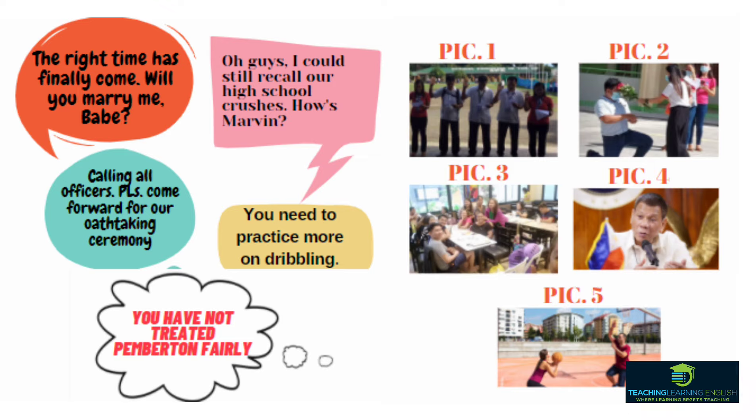So we have here: 'The right time has finally come, will you marry me, babe?' for picture two. 'Oh guys, I could still recall our high school crushes, was Marvin?' for picture three. Picture three is about an oath-taking ceremony — that is picture one. Picture five is about dribbling, and picture four is a speech of Duterte.